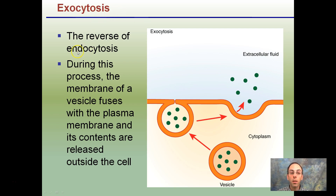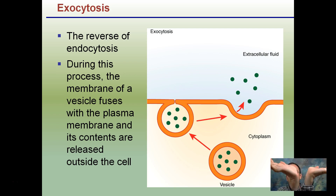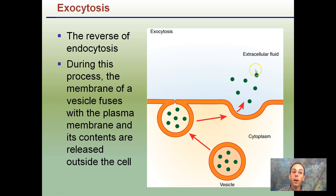Exocytosis is the exact opposite of endocytosis. If endo is taking in, exo is leaving. During this process, the membrane of the vesicle fuses with the plasma membrane and its contents are released to the outer portions of the cell. Here's our vesicle binding to the plasma membrane, and instead of sealing up, it simply opens up, spilling the contents out to the extracellular fluid. This is an example of exocytosis.